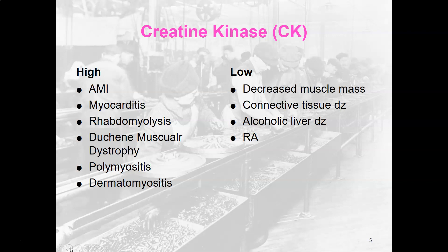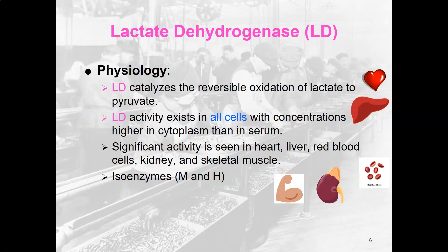High CK levels are expected in acute MI, myocarditis, rhabdomyolysis, Duchenne muscular dystrophy, polymyositis, and dermatomyositis. Low CK levels are seen in decreased muscle mass, connective tissue diseases, alcoholic liver disease, and rheumatoid arthritis.